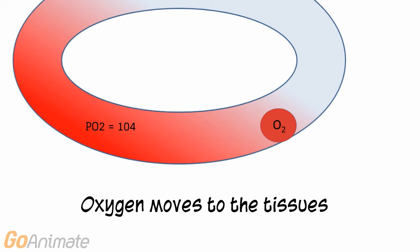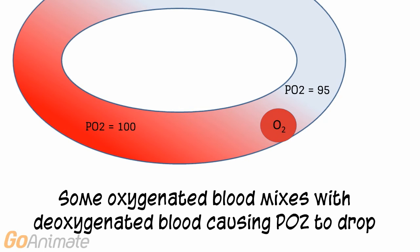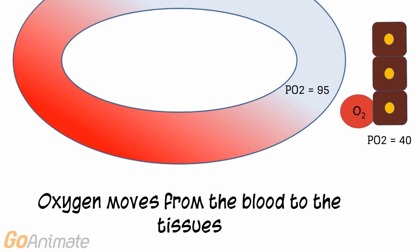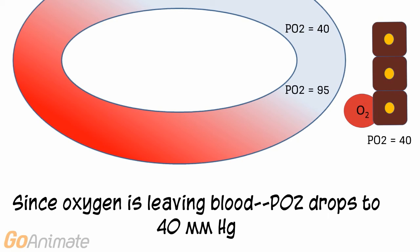Oxygen is then carried to the tissues. Along the way, the oxygenated blood mixes with some deoxygenated blood, causing the PO2 to drop to about 95 mmHg. The tissue PO2 is about 40 mmHg. When the oxygenated blood with a PO2 of 95 meets the tissue PO2 of 40, the partial pressure gradient allows for the movement of oxygen into the tissue by diffusion. Oxygen travels from the higher to lower partial pressure, and since oxygen leaves the blood, the PO2 drops to 40 mmHg.